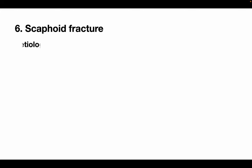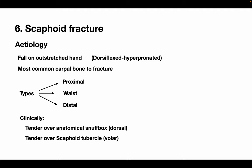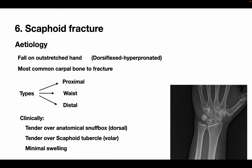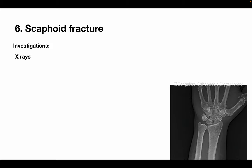The scaphoid usually fractures due to a fall on an outstretched hand when the wrist is excessively dorsiflexed and the forearm is hyperpronated. Based on location, it can be a proximal, waist, or distal scaphoid fracture, although the majority occur through the waist. Clinically, swelling may be minimal but tenderness is elicited over the anatomical snuff box and over the volar aspect of the bone. The key to diagnosis is clinical suspicion. Routine PA and lateral views may be insufficient; special views such as an oblique view in 45-degree pronation and a PA view with ulnar deviation — also called the scaphoid view — are often necessary.